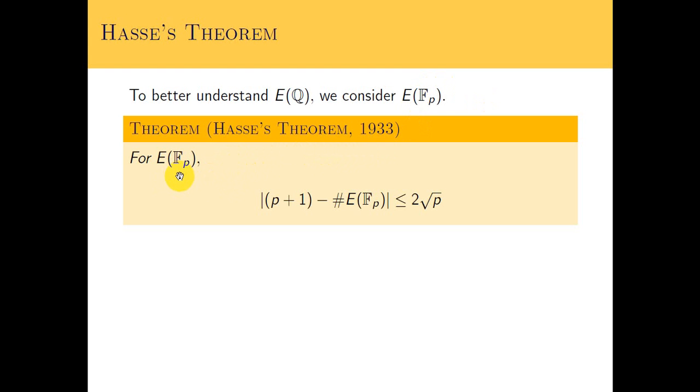For the elliptic curve where all the x and y coordinates are chosen to come from the prime field, the size of the elliptic curve differs from p plus 1 by this constant times root p. So this is sort of an upper bound for the difference between these two guys. Normally when Hasse's theorem is written, it doesn't use these parentheses. I included the parentheses to show that what we're interested in is the difference between these two guys.